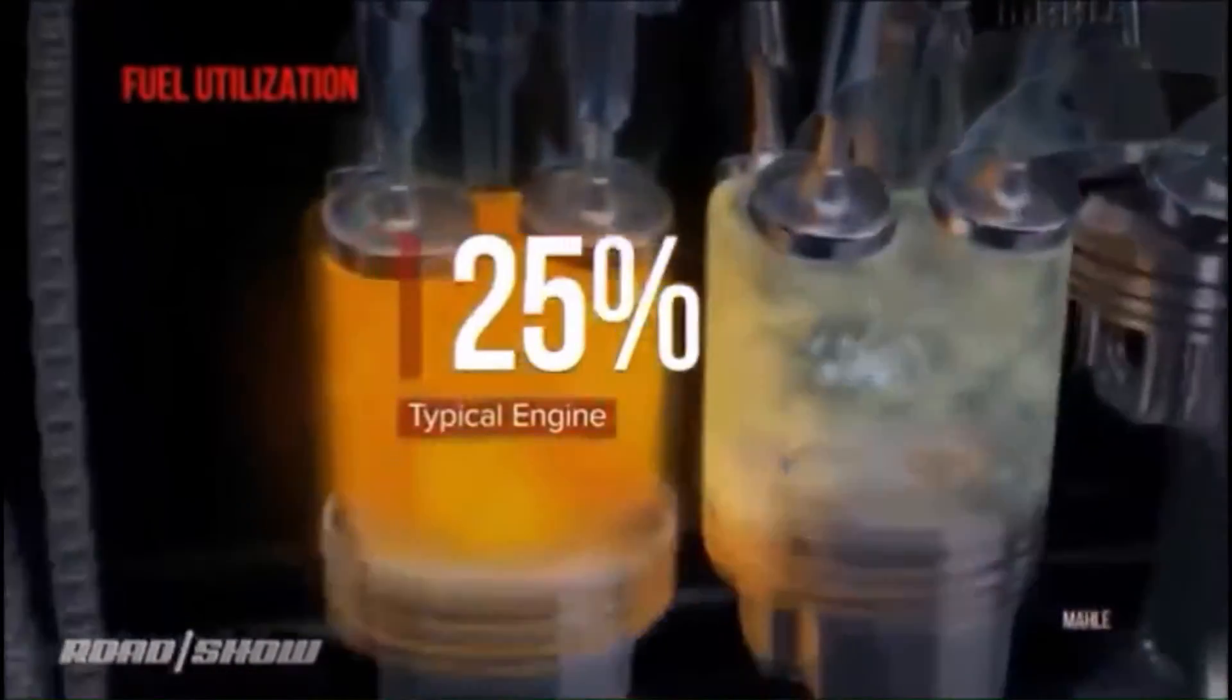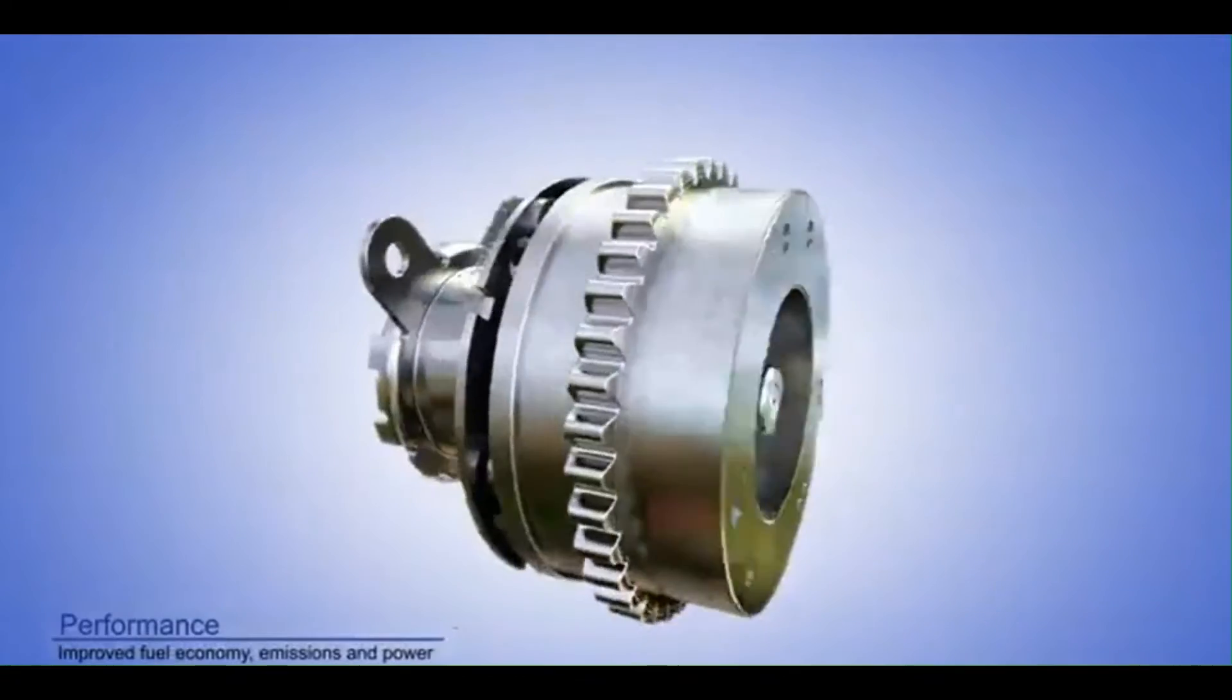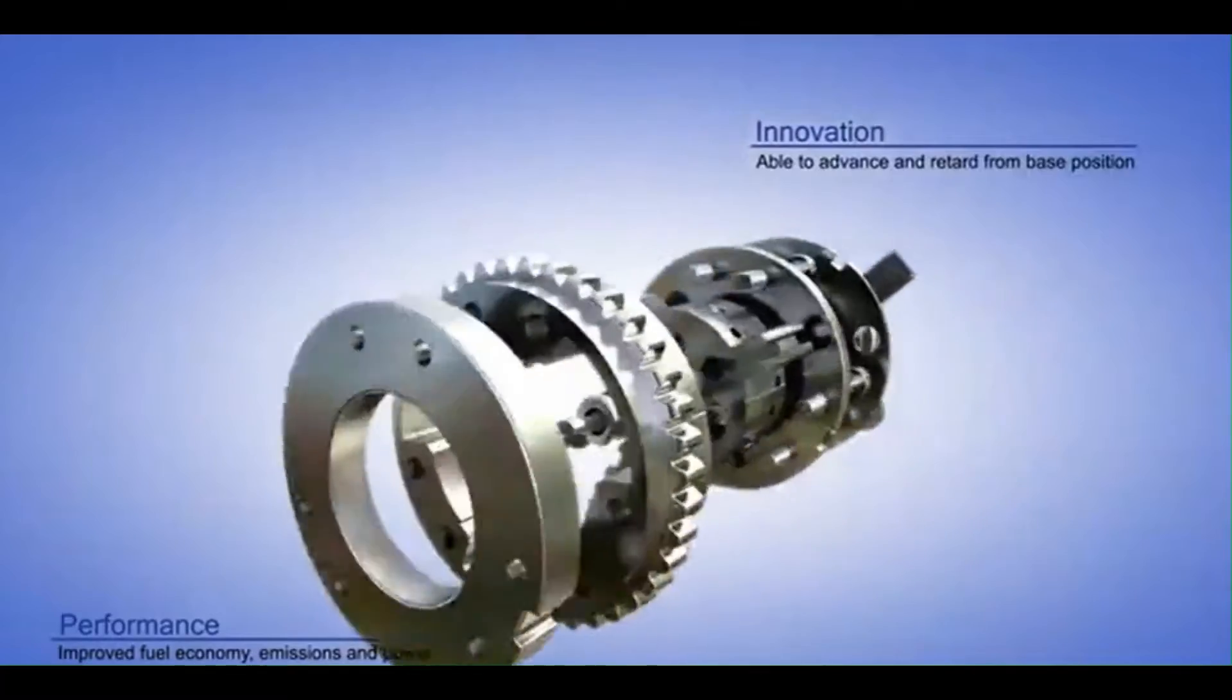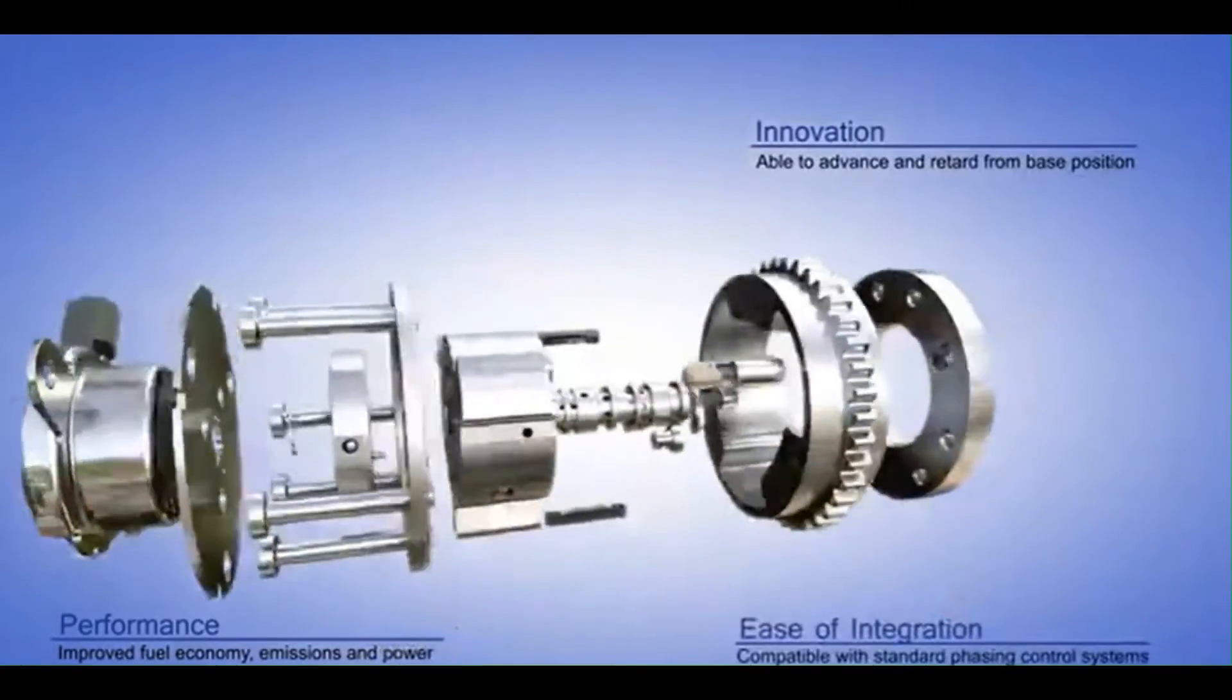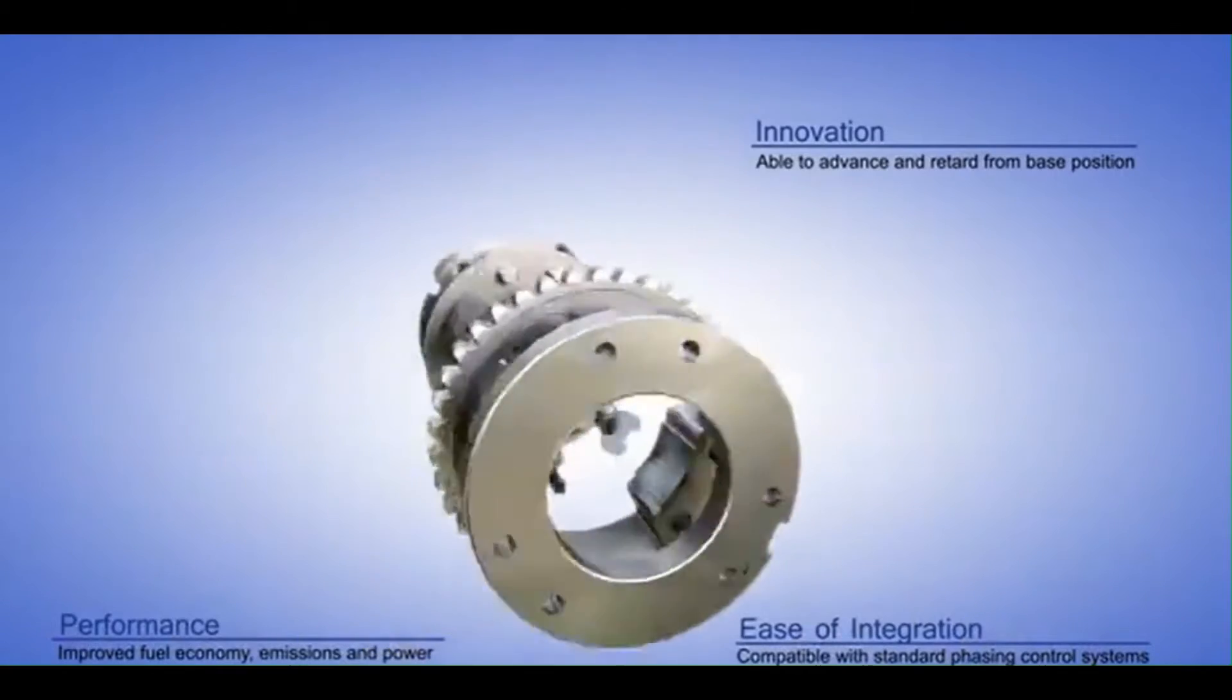In general, the larger intake valve ensures maximum air enters the combustion chamber for efficient fuel burning, while the smaller exhaust valve efficiently expels burnt gases, maintaining the flow balance in the engine. This balance between intake and exhaust is essential for engine performance.